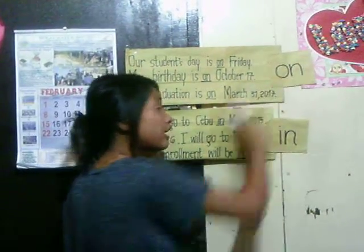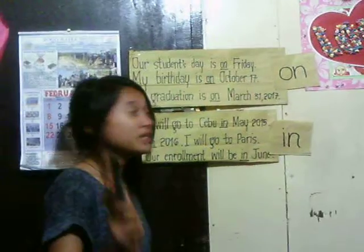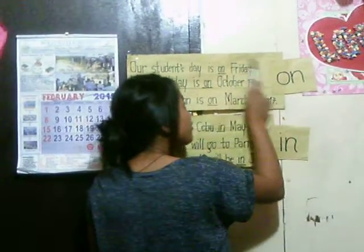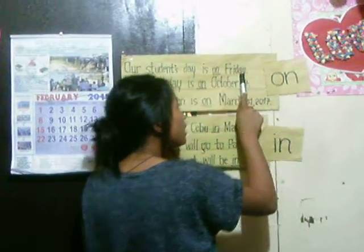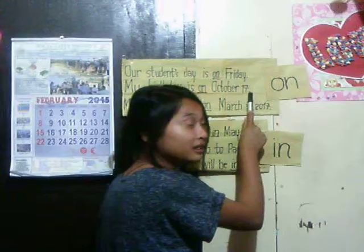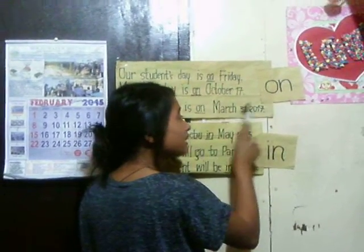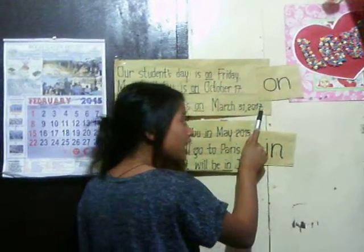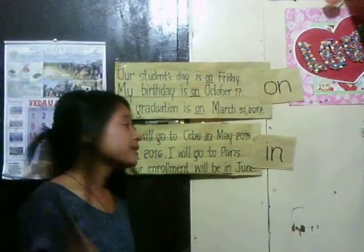So to recap: use on if we specify the name of the week, month and a date, or month, date, and year. While in is used when we specify the month and the year, the year alone, or the month alone.